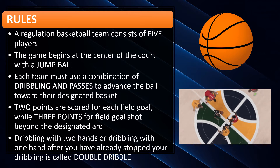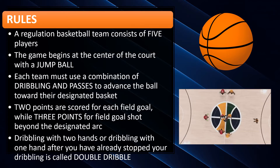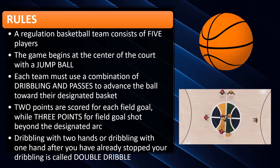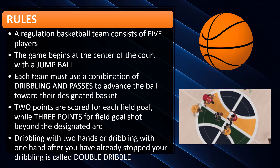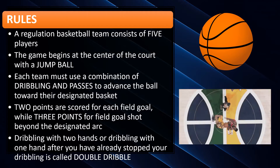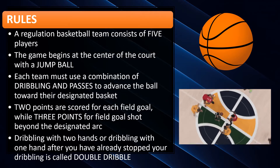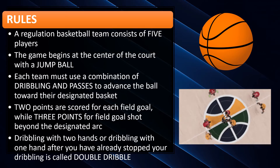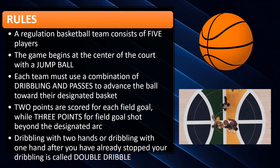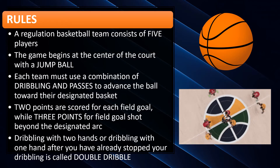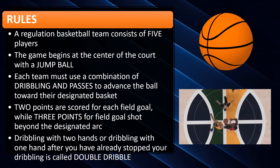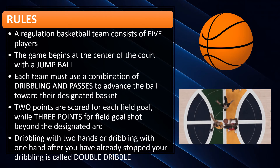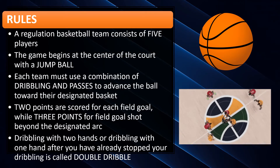There are many rules in the game of basketball. A regulation basketball team consists of five players. The game begins at the center of the court with a jump ball. Each team must use a combination of dribbling and passing to advance the ball toward their designated basket. Two points are scored for each field goal, while three points for a field goal shot beyond the designated arc. Dribbling with two hands or dribbling with one hand after you have already stopped your dribbling is called the double dribble.